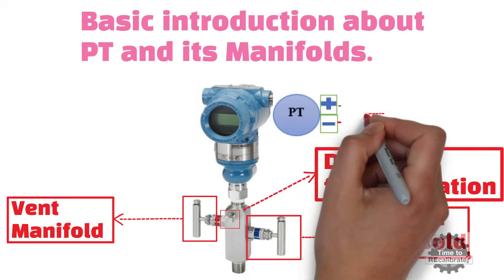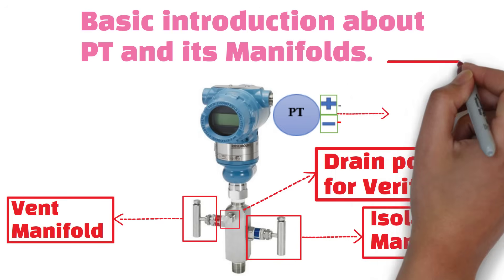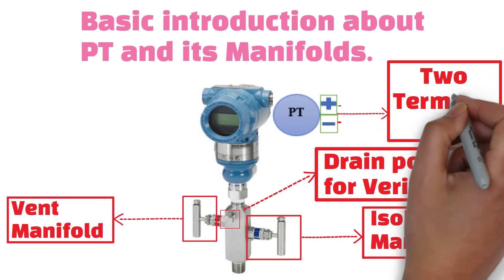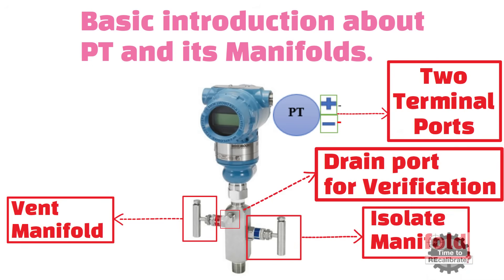All pressure transmitters have two 24-volt DC terminal ports. In other words, we need to use a 24-volt DC power supply to turn on the device.